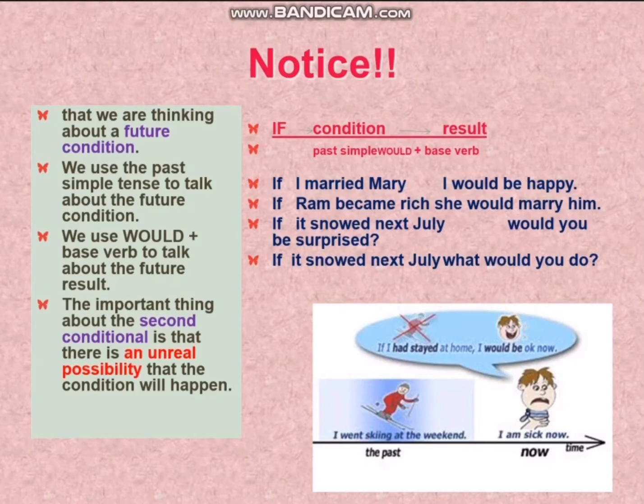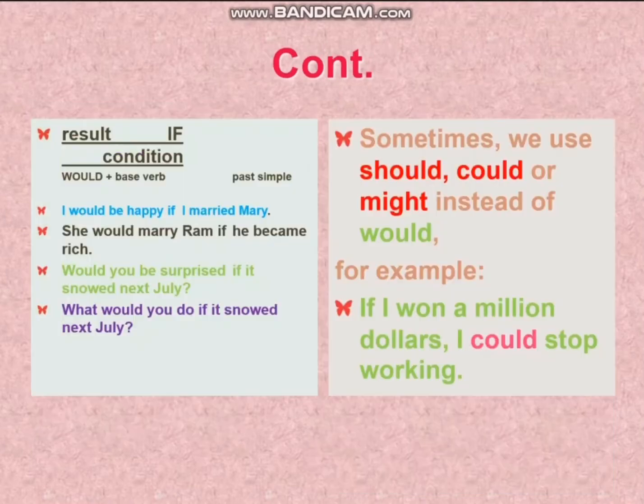If I married Mary, I would be happy — but I didn't. If Ram became rich, she would marry him — but he didn't. If it's not next July, what would you do? Sometimes we use should, could, or might instead of would. For example: if I won a million dollars, I could stop working.